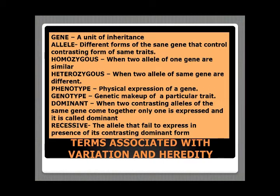Now let us study some common terms used in heredity. A gene is a stretch of DNA responsible for controlling one particular trait — it is the basic unit of inheritance. Genes always occur in pairs because we have two sets of chromosomes, giving two different forms of the same gene. Different forms of the same gene that control contrasting forms of the same trait are called alleles. For example, height is the gene, and the two forms — tall and dwarf — are two alleles.